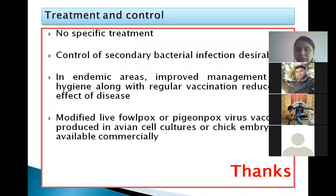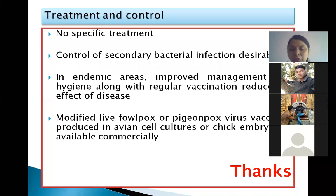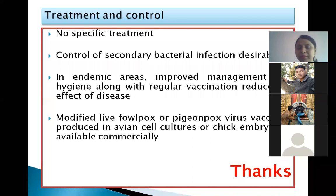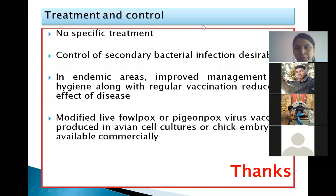Coming to treatment and control, there is no specific treatment, but control of secondary bacterial infection is desirable. In endemic areas, improved management and hygienic conditions along with regular vaccination are used to reduce the effect of the disease. Modified live Fowlpox vaccine or Pigeonpox virus vaccine, produced in avian cell culture or chick embryo, are commercially available and used for the control of fowlpox.